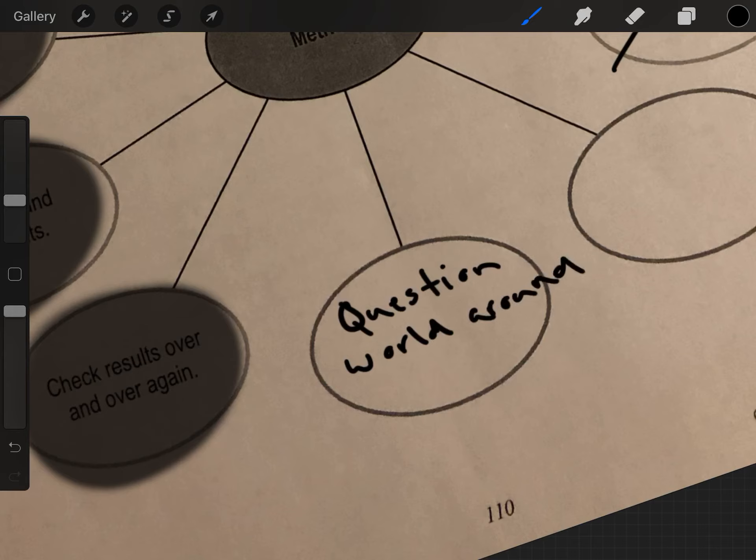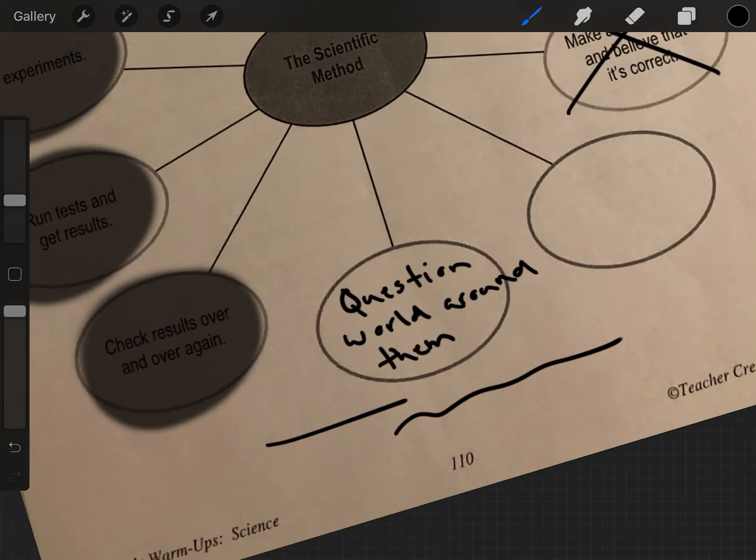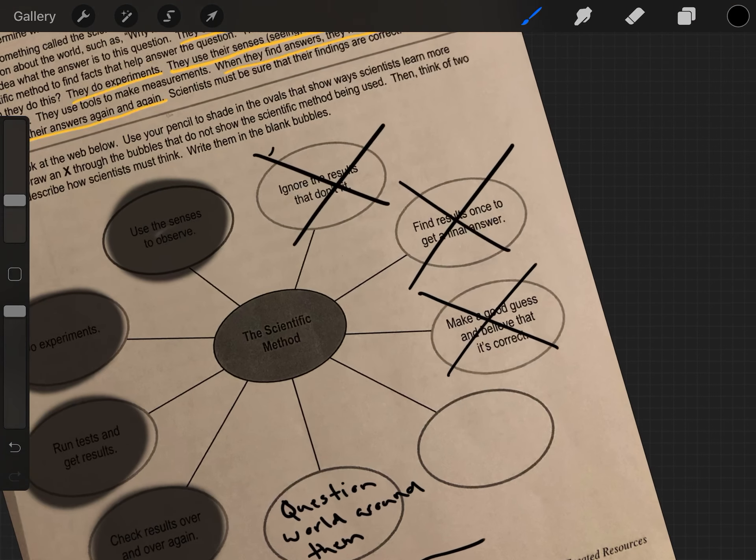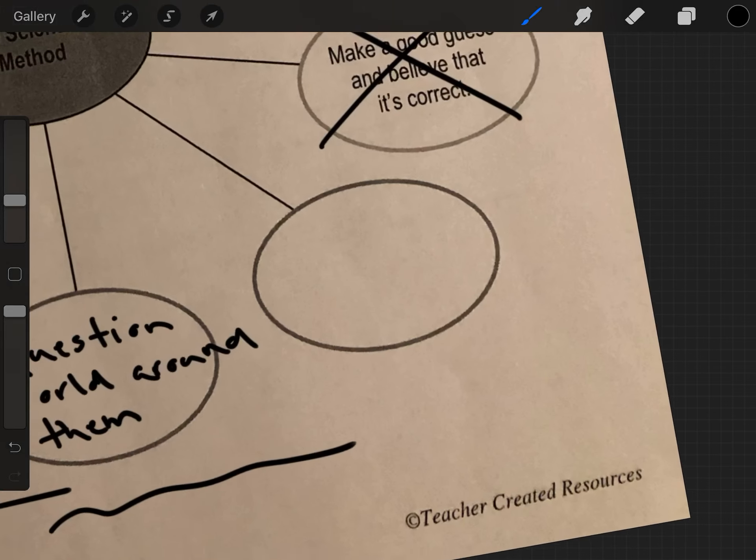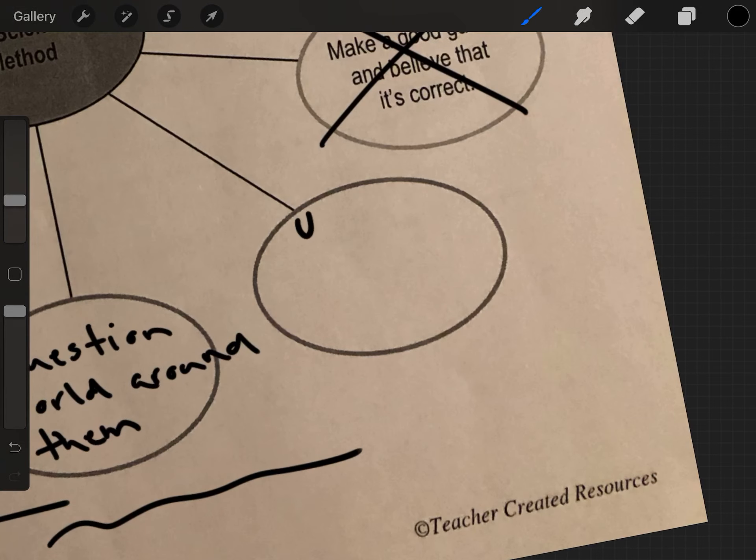The pencil I'm using right now has a ton of smoothing on it, which means it makes it easier to draw a somewhat straight line but it makes it hard for writing. So they have to question the world around them. What I'm doing is I'm just referring back to the passage to find our answers. They must be able to prove their facts are true. How do they do this? They do experiments. Oh, here we go. They use tools. Use tools to make measurements.